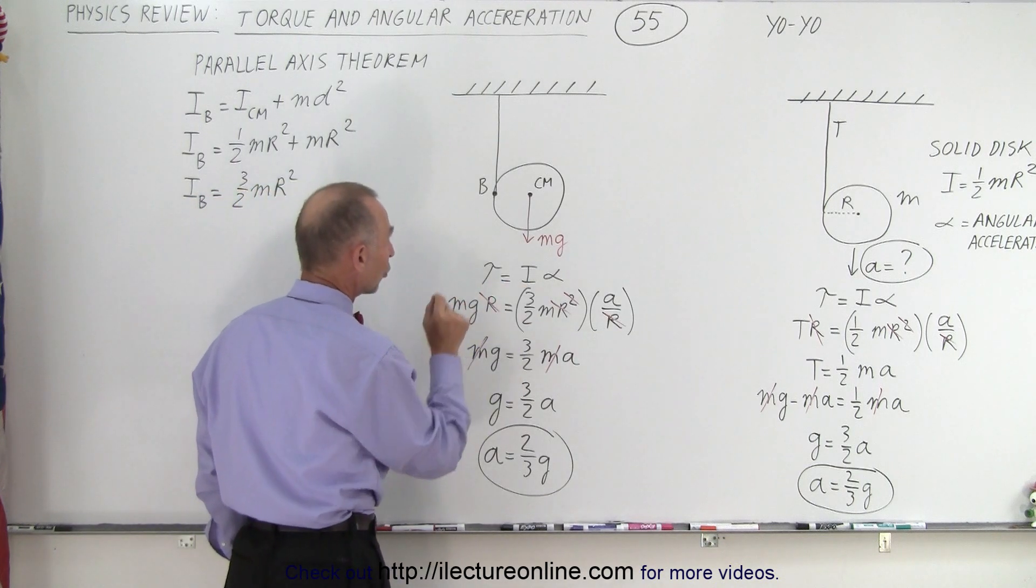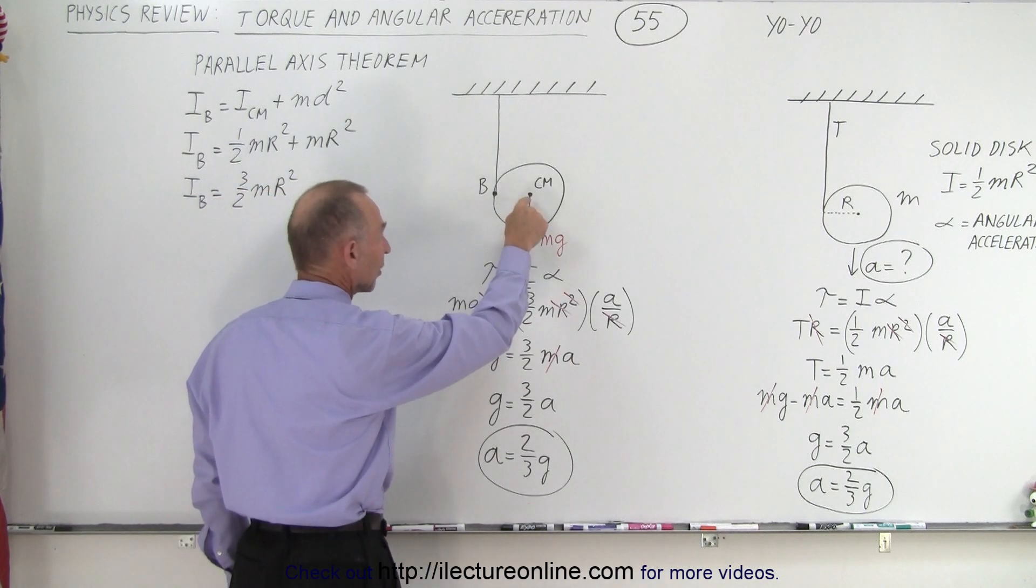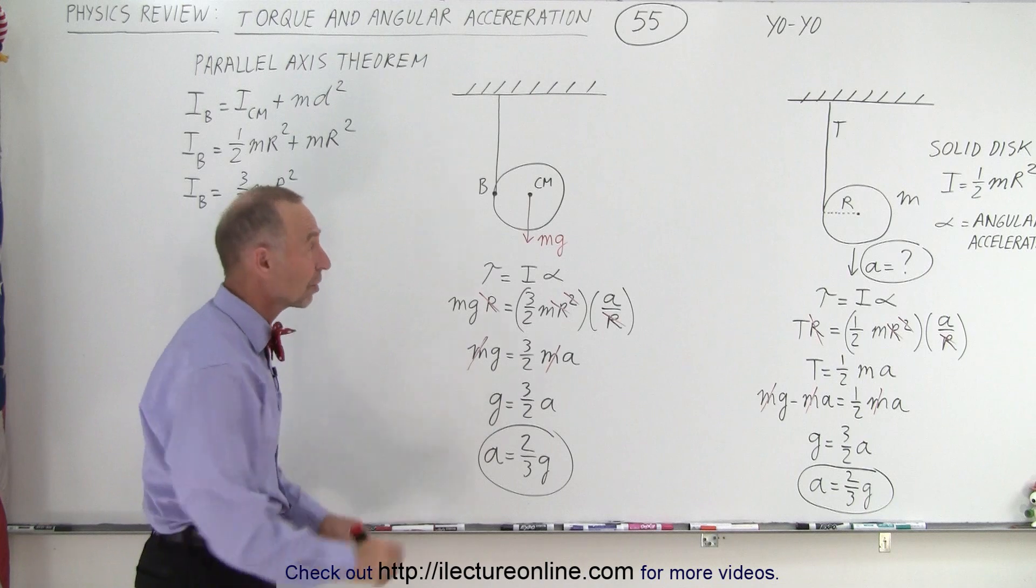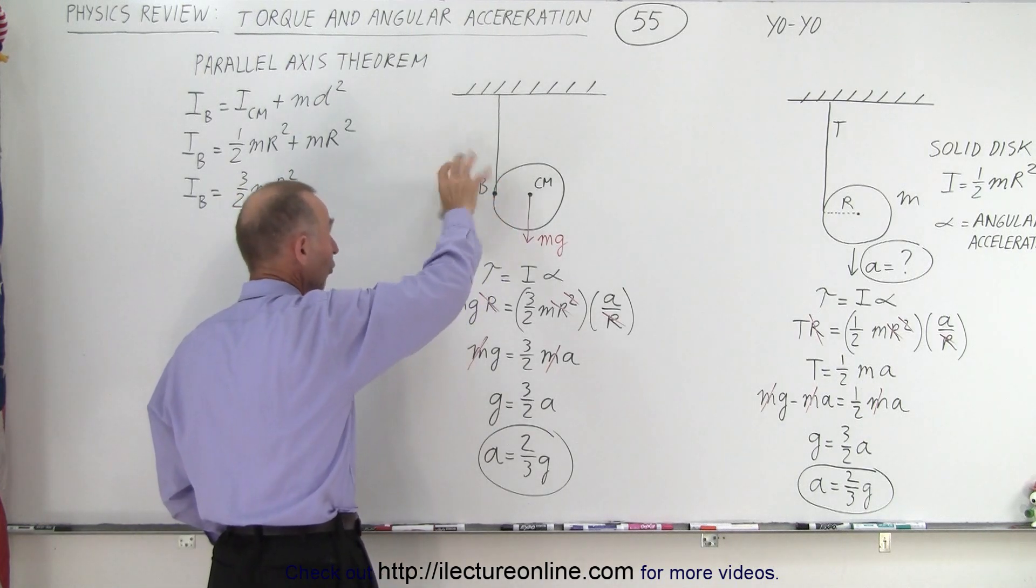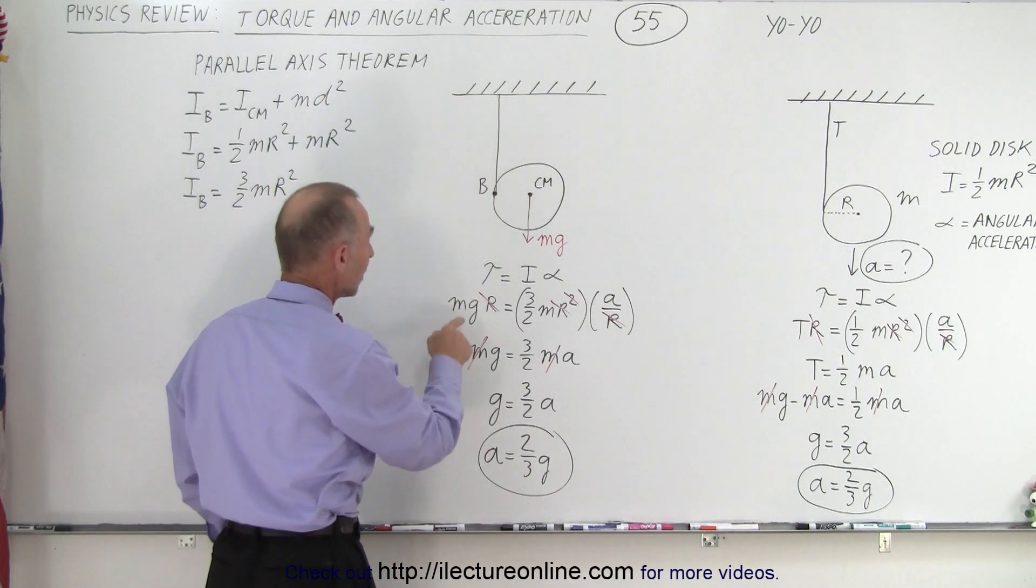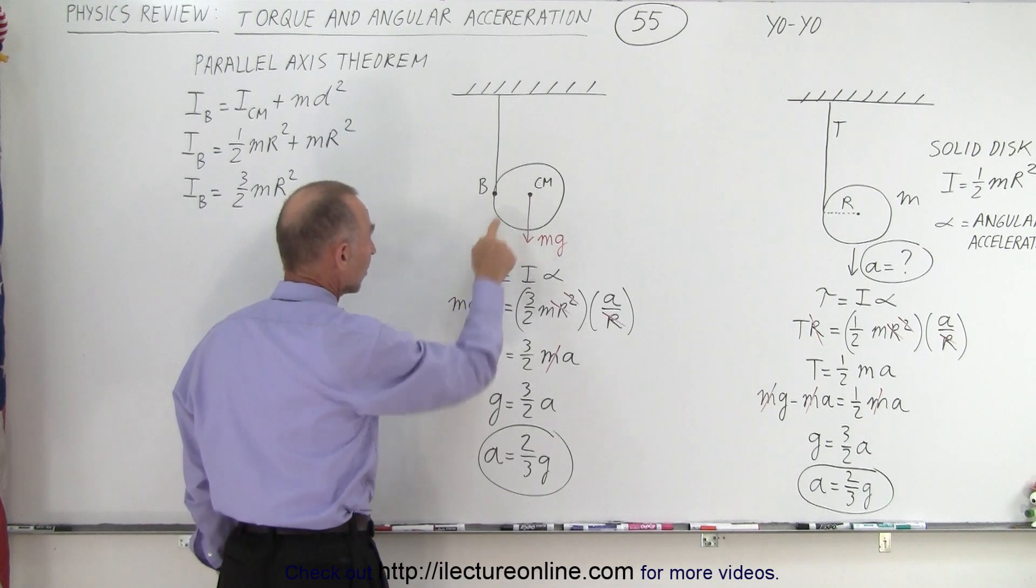The torque equals I alpha, but now the torque is caused by the weight of the disc, not by the tension in the string. The weight of the disc will cause it to rotate about b, so that's mg, which is the weight of the disc, times r.